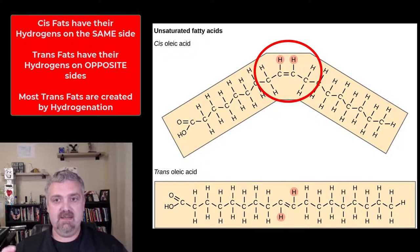A cis fat has a double bond. Notice that both hydrogens are on the same end, and that's why you have that kink in the tail.